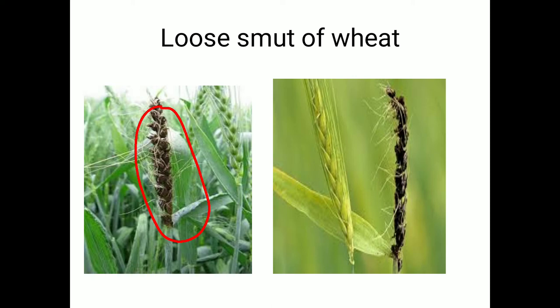In hot water treatment, soak the seeds for 4 to 6 hours to activate the dormant mycelium, then dip the seeds in water at 53 degrees Celsius for 10 minutes, dry the seeds, and treat them with suitable pesticides. For example, treat seeds with Carboxin at 2 grams per kg of seeds, or Carboxin plus Carbathiin at a rate of 2.5 grams per kg of seeds.